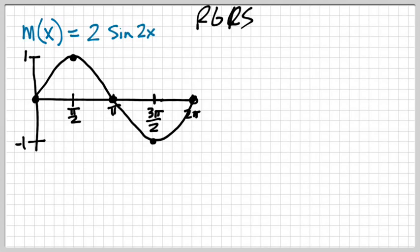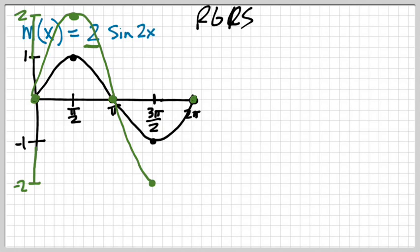I'll take care of the stretches first, because with trig functions it's better to do stretches before shifts. The 2 in front means a vertical stretch — the graph stretches all the way up to 2, the ones at 0 stay at 0, and the negative 1 stretches down to negative 2. Now the last thing to discuss is the 2 in front of x. One complete cycle of sine goes from 0 to 2 pi, but in this graph 2x = 2 pi, so to get x by itself we divide by 2, giving x = pi.